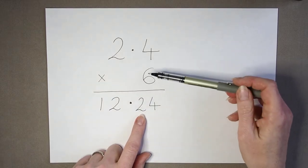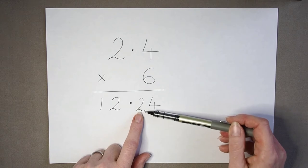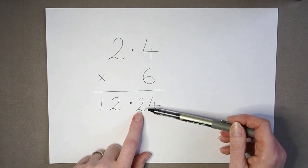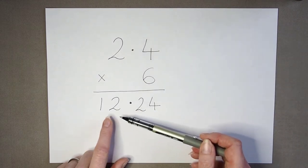They need to remember that this 2 here is actually 2 whole ones because this is tenths. 24 tenths would be 2 whole ones.